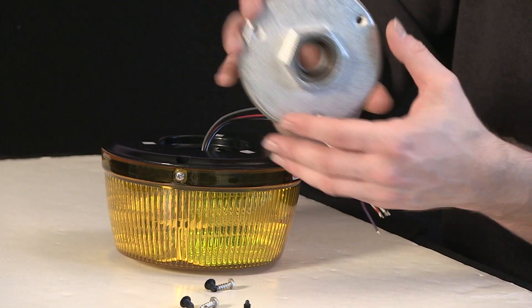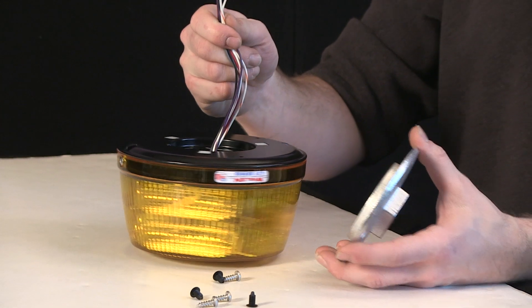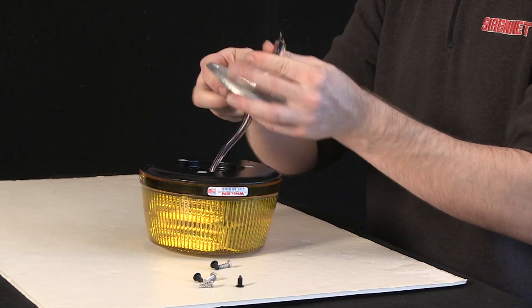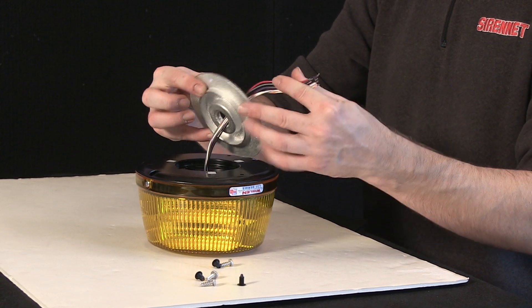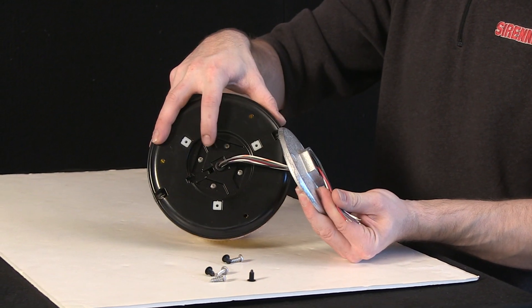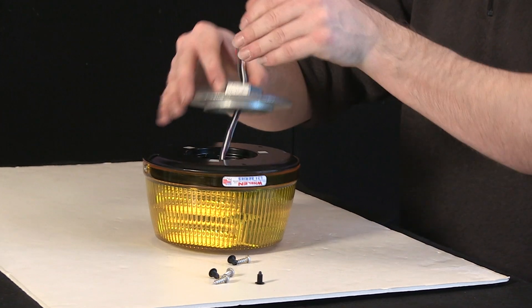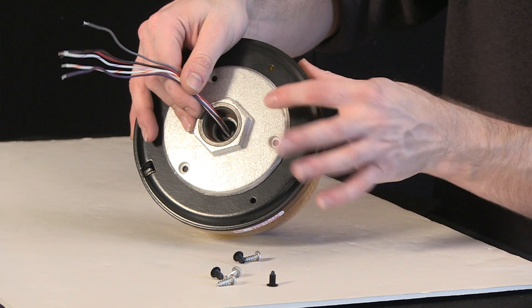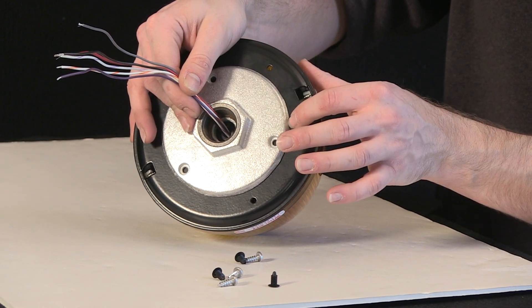Pipe mount here, take the wiring harness, route it through the center hole. And you can see the lip here will match with the inset on the beacon base. So go ahead, put that on, just spin it around to match up the hole with the screws.